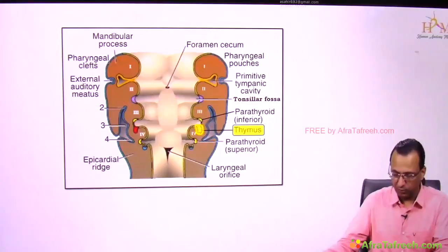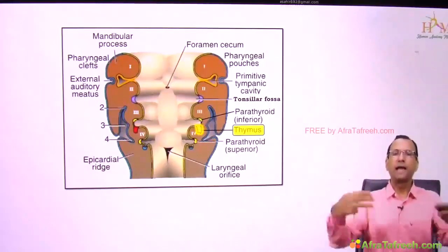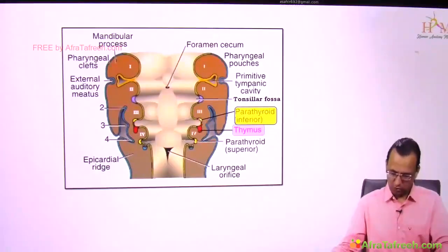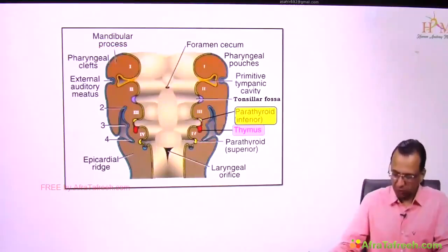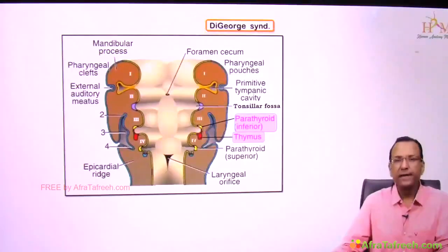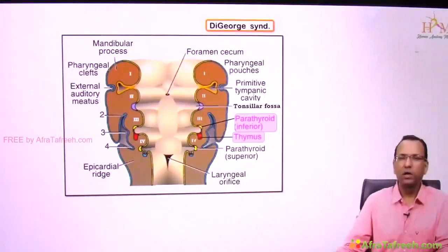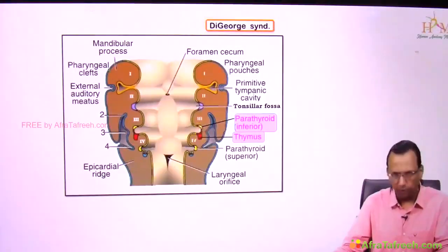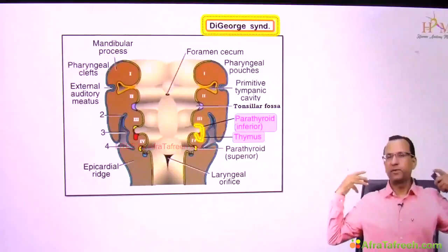Pouch 3 has a ventral and a dorsal portion. Looking at the ventral side, the thymus will develop. Looking at the dorsal side, the inferior parathyroid will develop. Both may be missing in DiGeorge syndrome because in DiGeorge syndrome, pouches 3 and 4 are compromised.